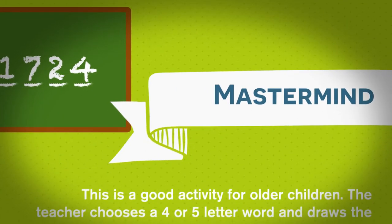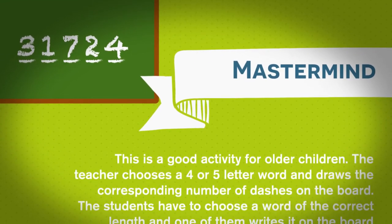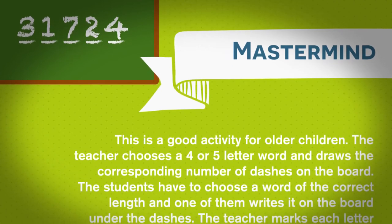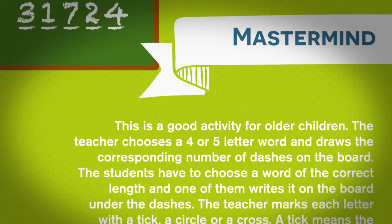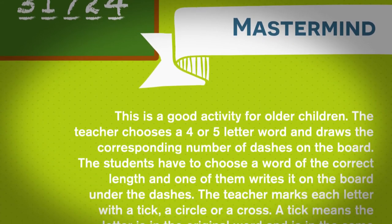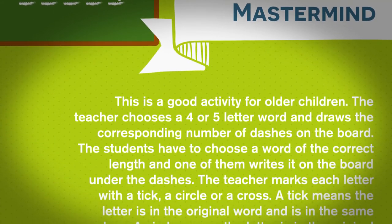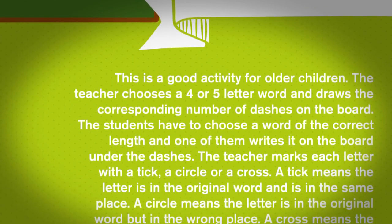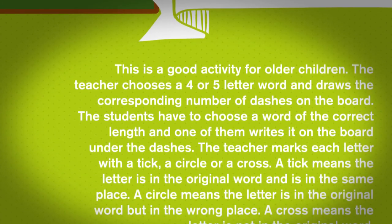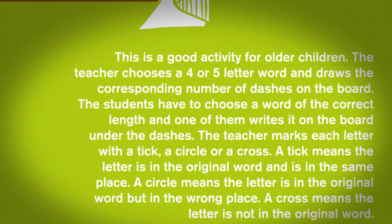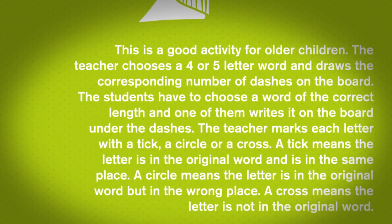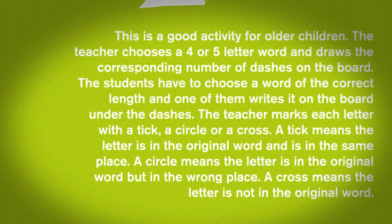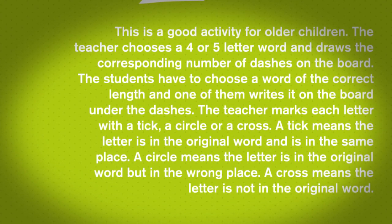Mastermind. This is a good activity for older children. The teacher chooses a four or five letter word and draws the corresponding number of dashes on the board. The students have to choose a word of the correct length and one of them writes it on the board under the dashes. The teacher marks each letter with a tick, a circle, or a cross. A tick means the letter is in the original word and in the same place. A circle means the letter is in the original word but in the wrong place. A cross means the letter is not in the original word.